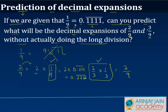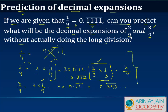Similarly, to find the value of 3 upon 9, you simply write 3 times 1 upon 9, or 3 times 0.1111, which gives 0.333... with a bar over it. That is how you can simply predict the value of a decimal expansion without performing the long division method.